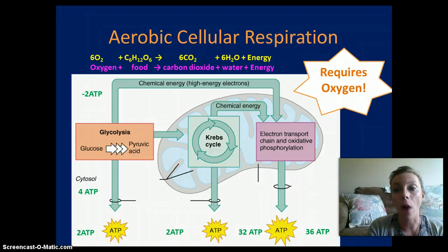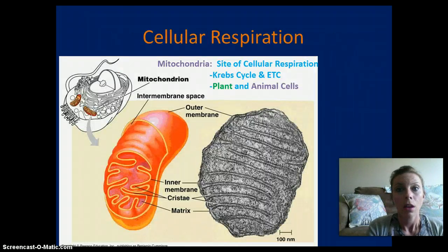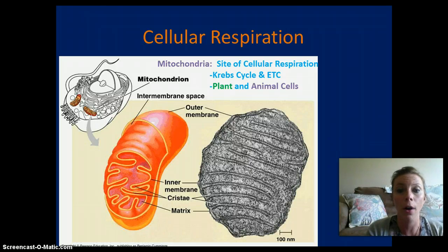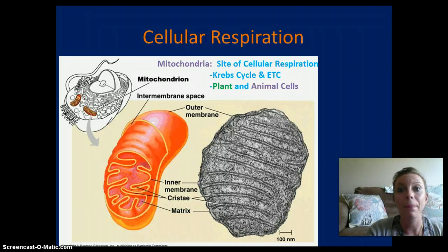Aerobic cellular respiration requires oxygen. Cellular respiration occurs in the mitochondria — that is the site for the Krebs cycle and the electron transport chain. Glycolysis occurs in the cytoplasm and can happen with or without oxygen. Cellular respiration occurs in both plant and animal cells.